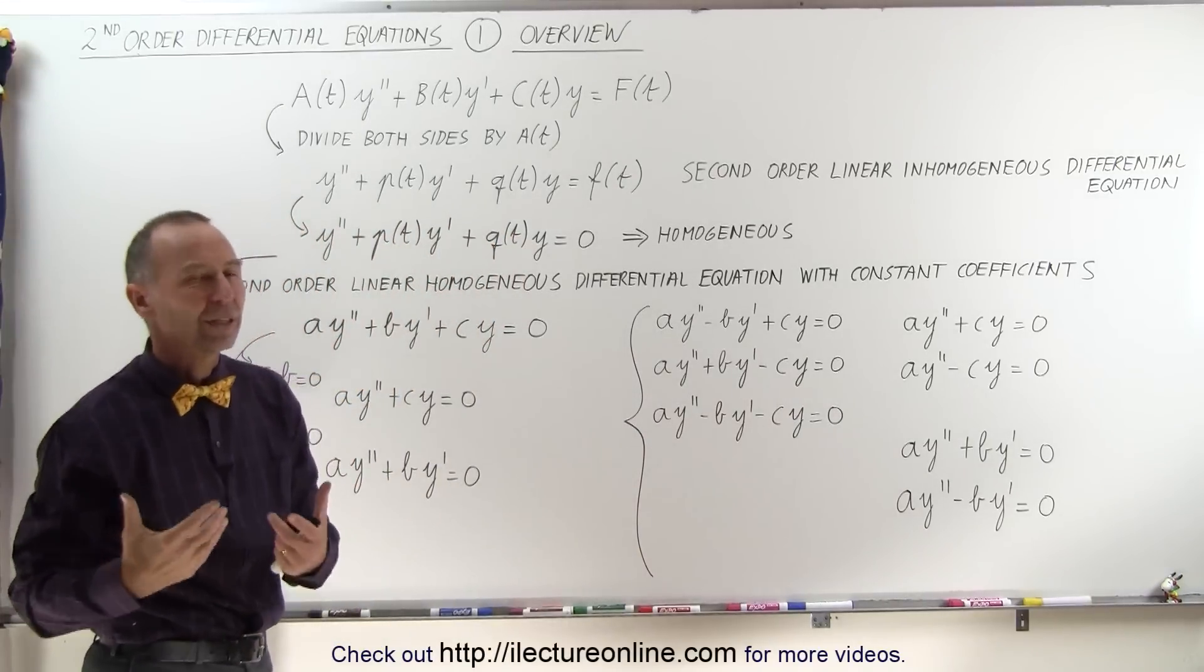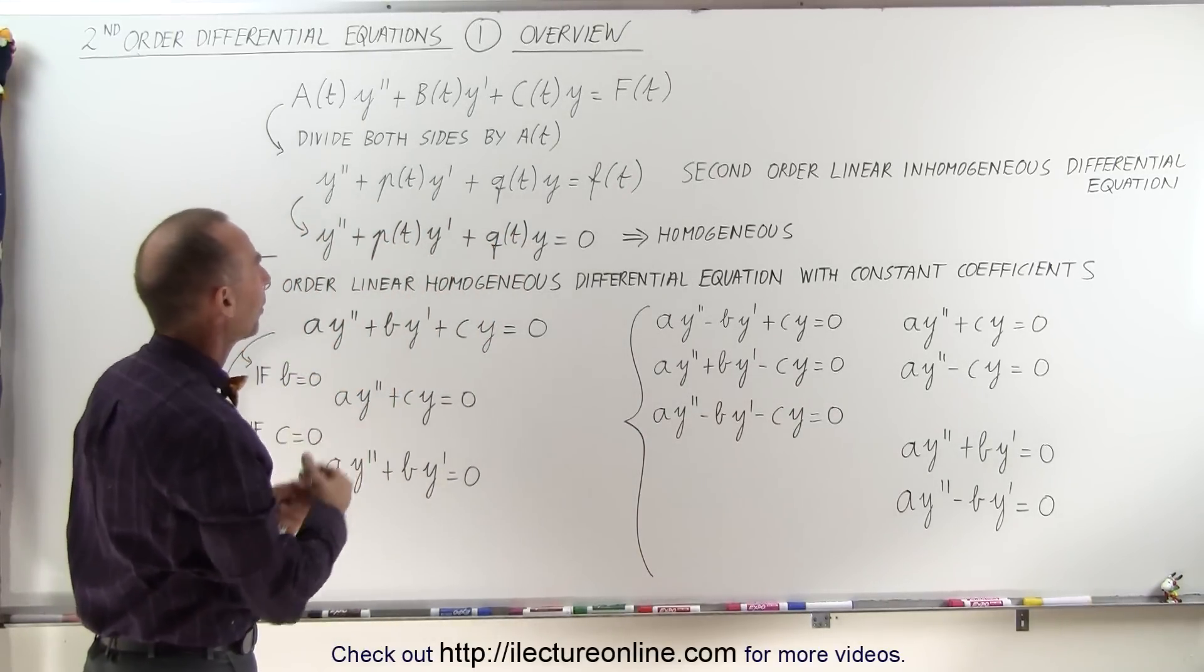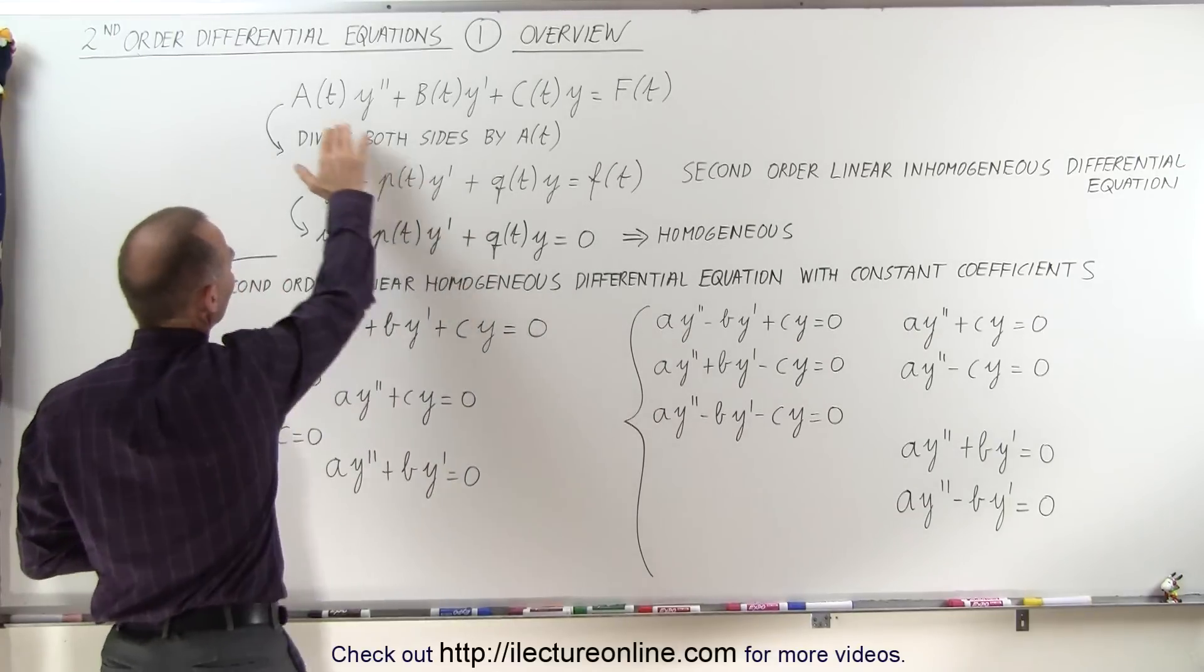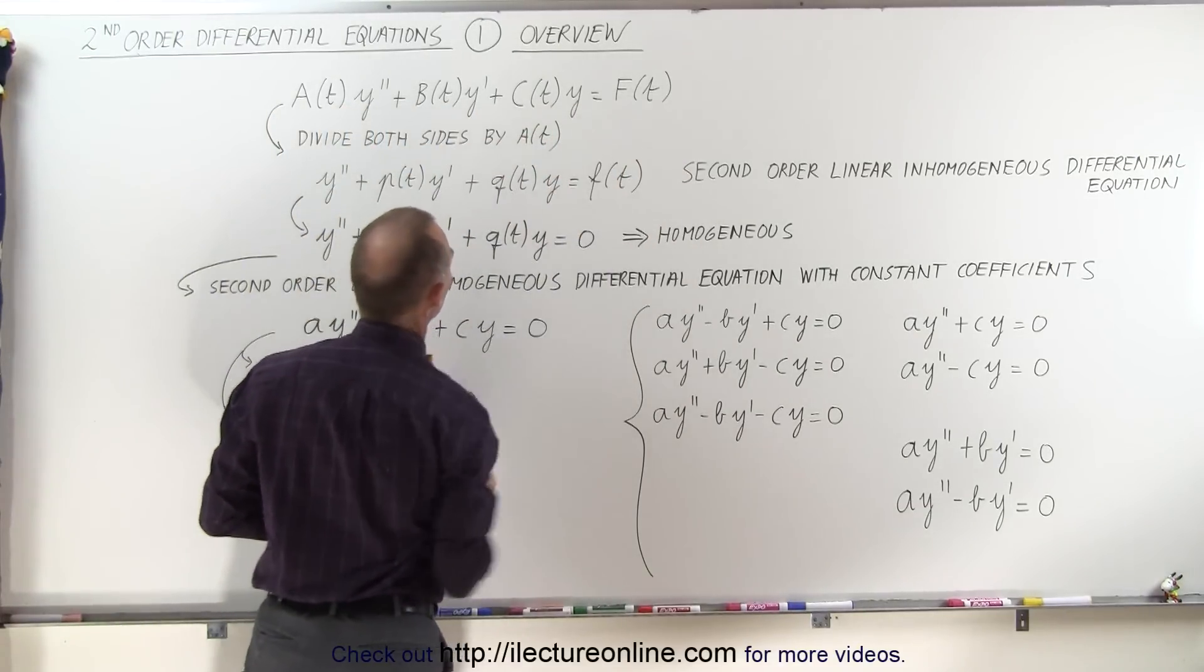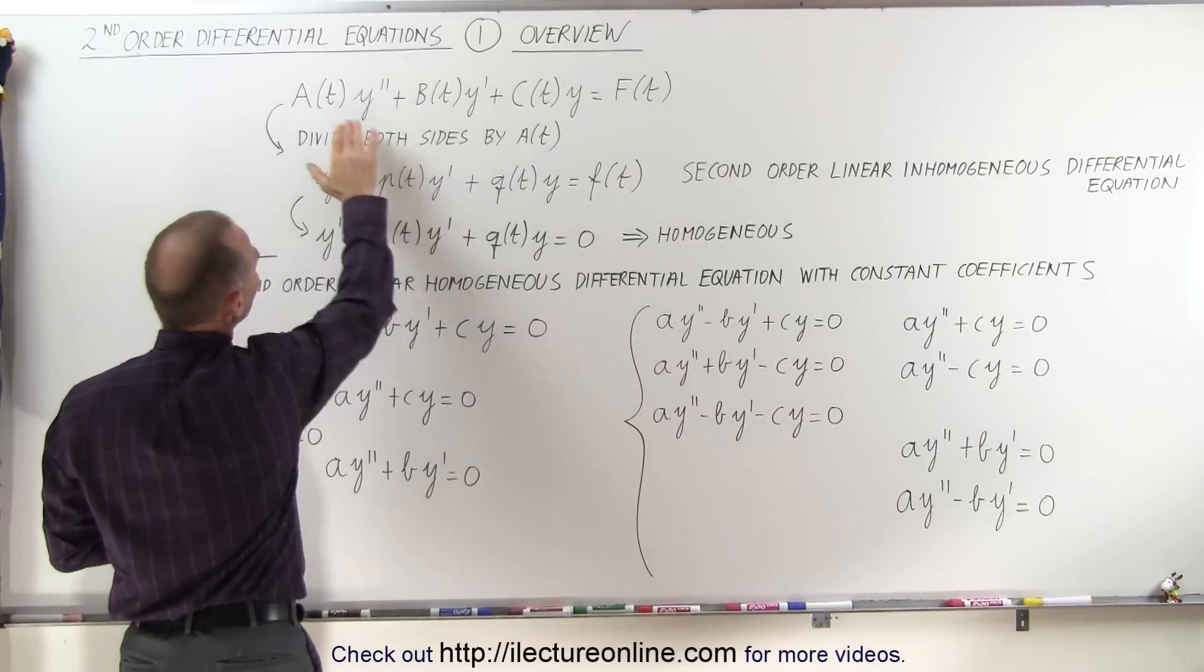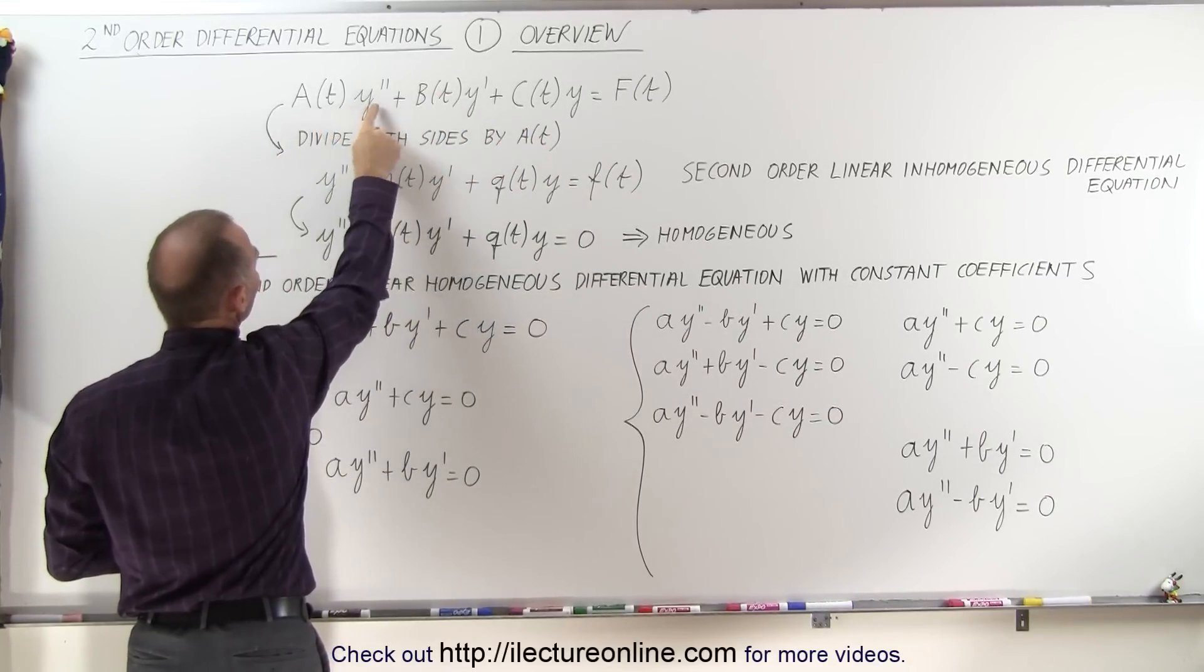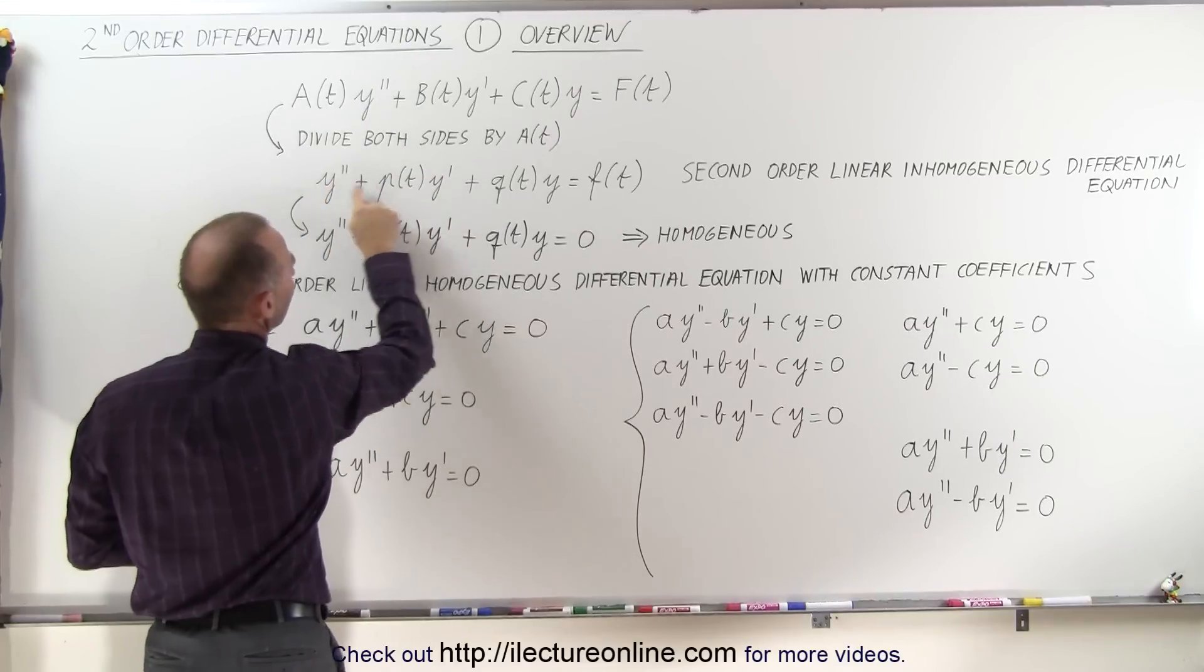Later on we'll see what each of these things mean and how they're applied. But in this case what we want to show you is that typically this is not the general format of a second-order differential equation. If we divide both sides of this equation by this function of t in front of y double prime, we get something that looks like this.